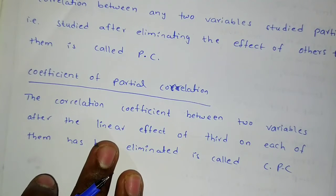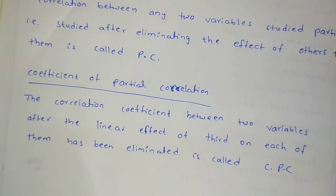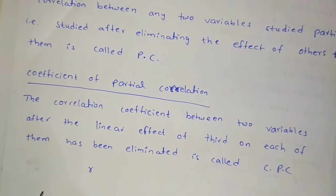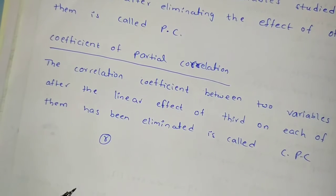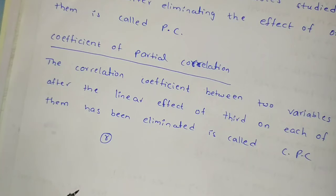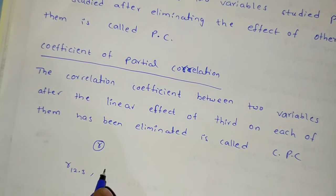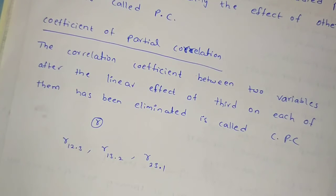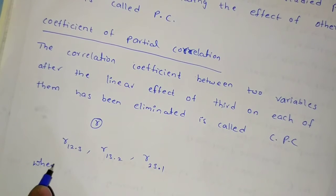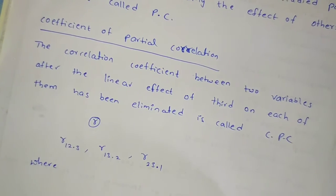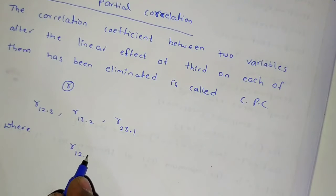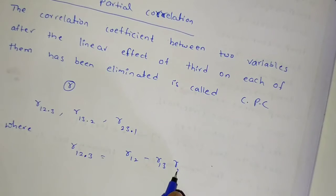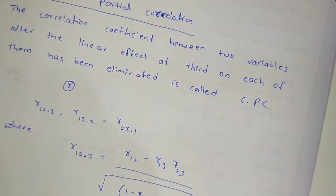For the coefficient of correlation, we have the partial correlation coefficients: R123, R132, and R231. The formula for R123 is: R12 minus R13 times R23, divided by the square root of (1 minus R13 squared) times (1 minus R23 squared).